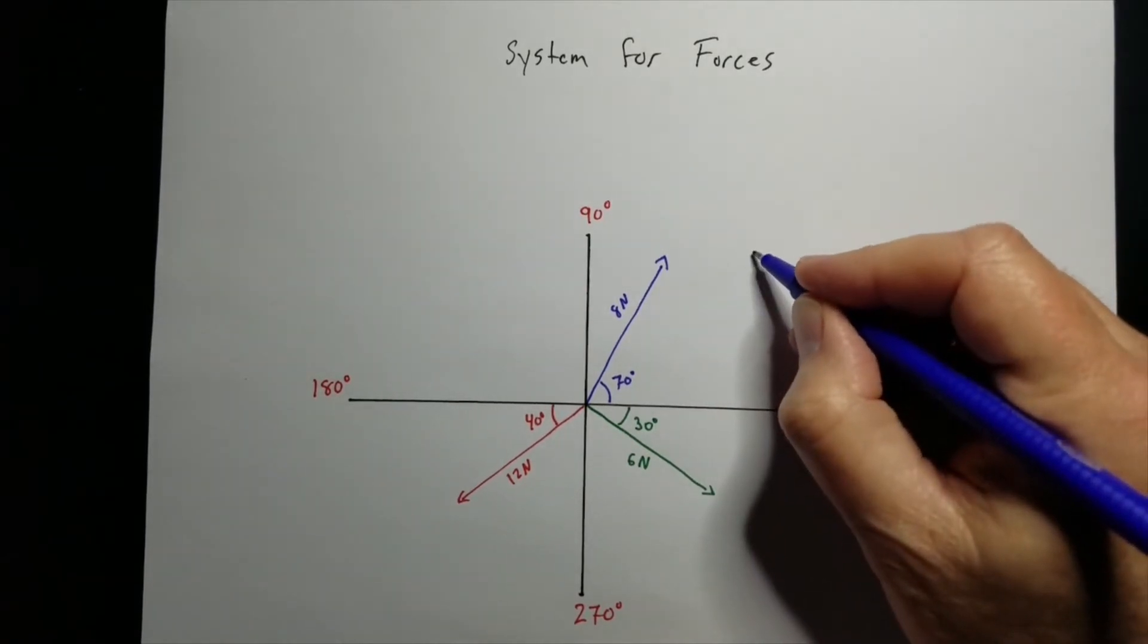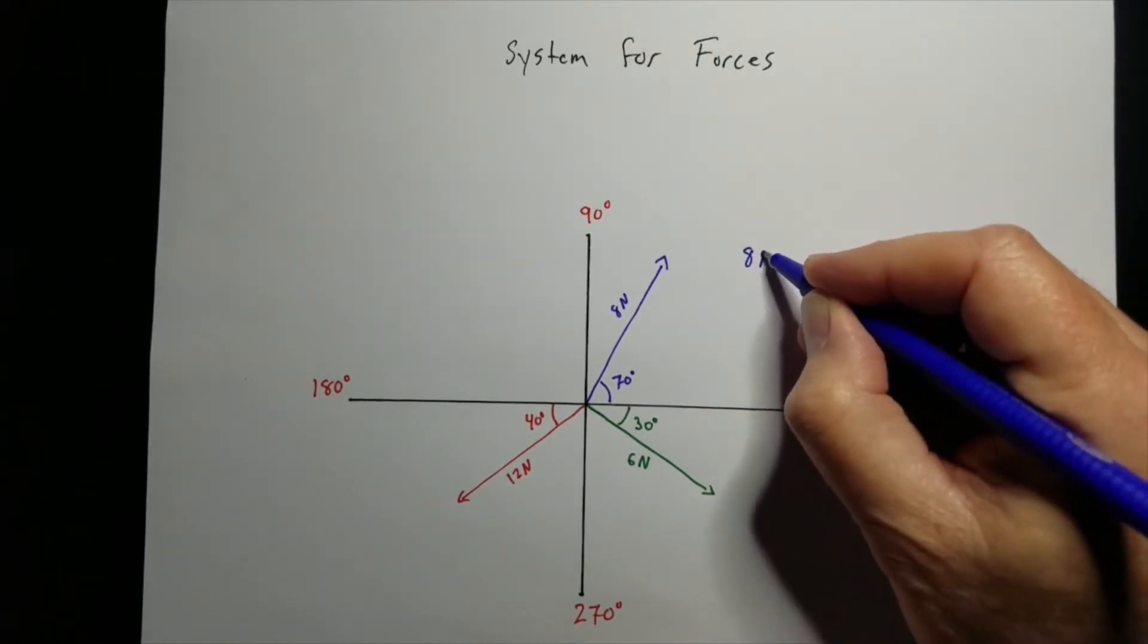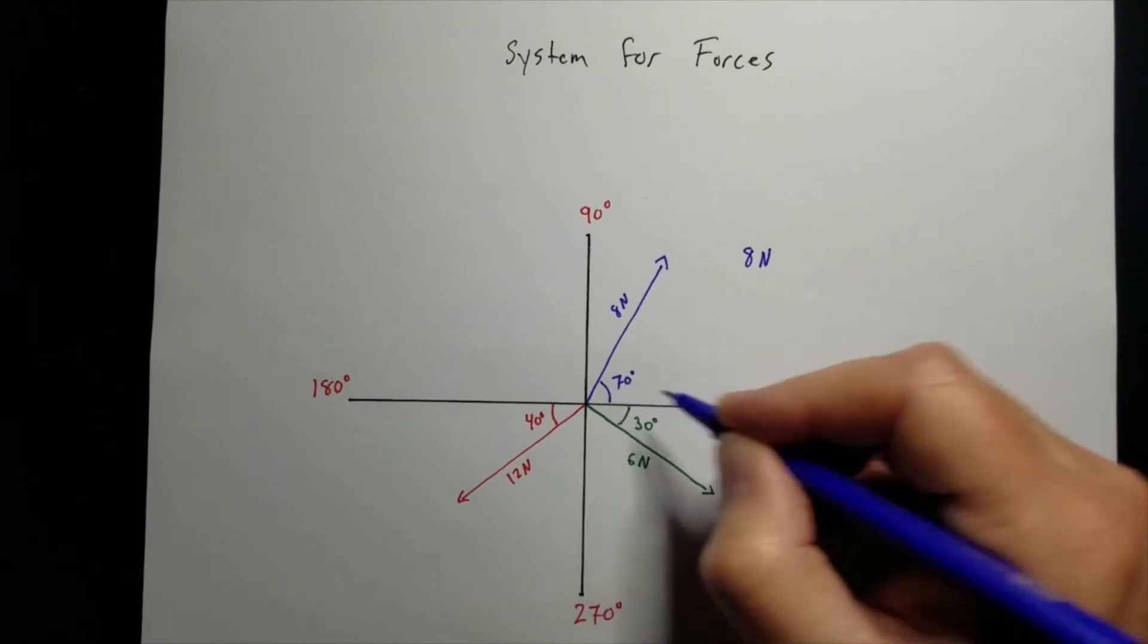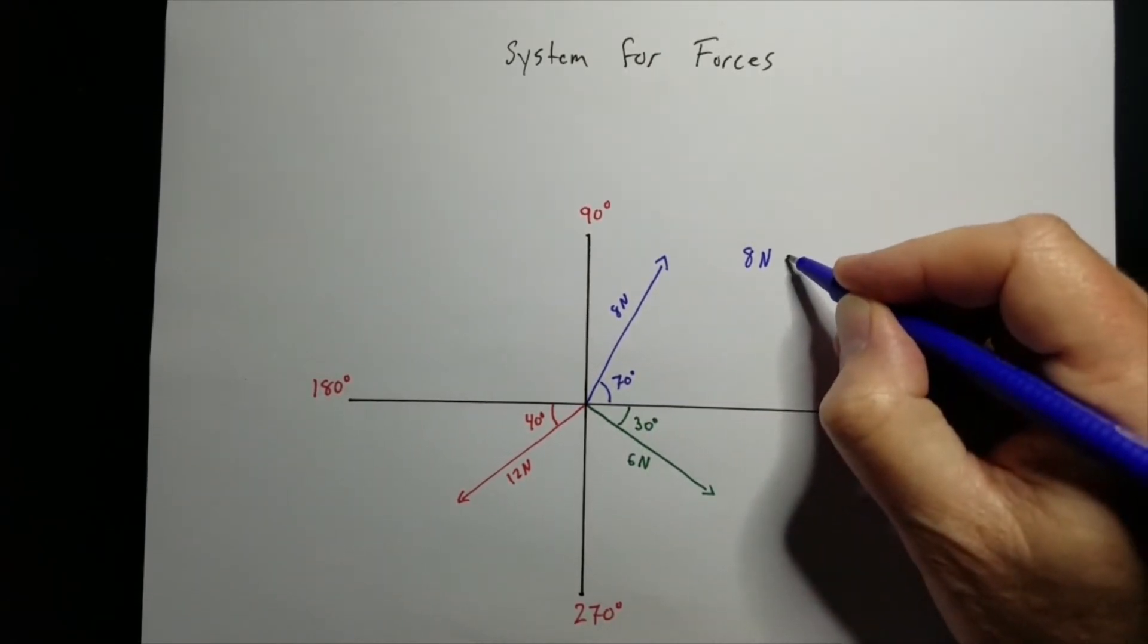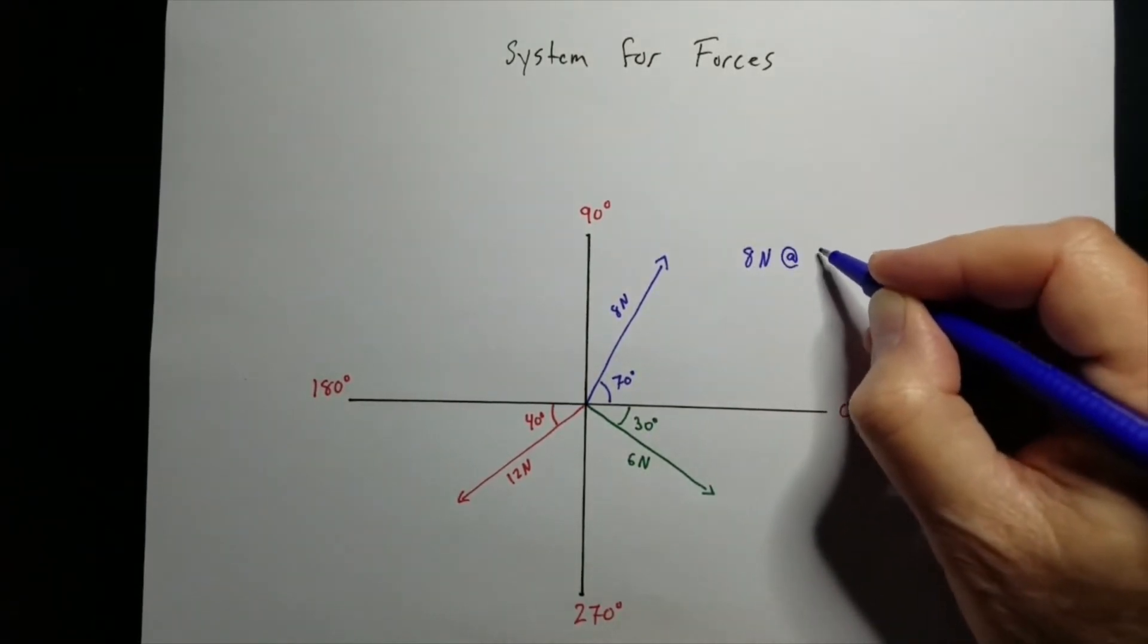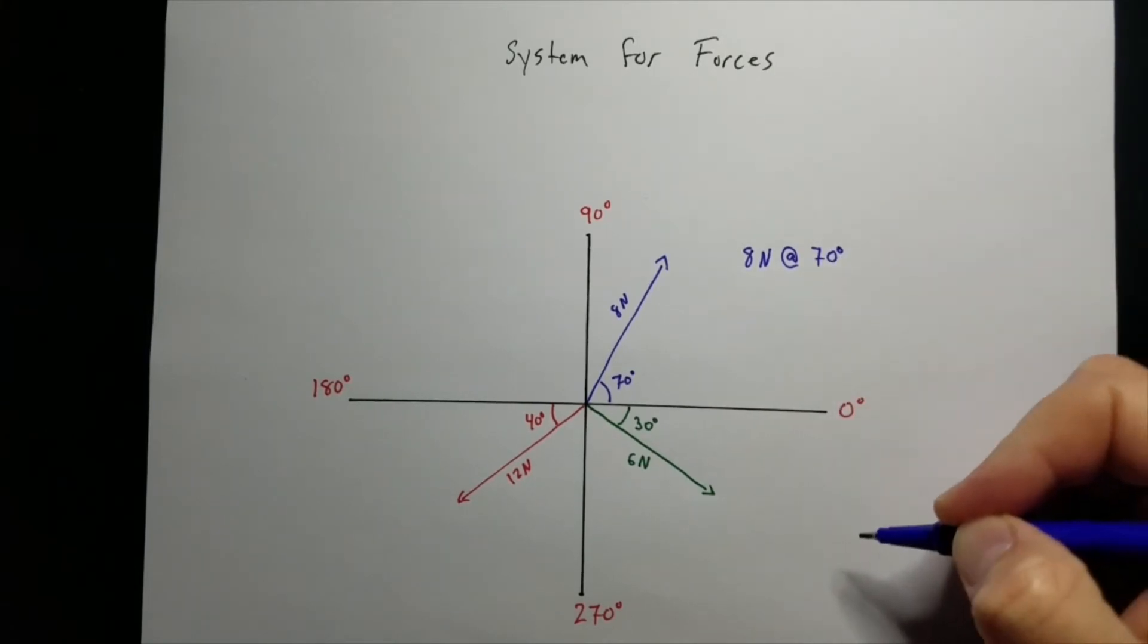So this first one that I've got is 8 newtons. We've already got the angle with respect to 0. So it's 8 newtons at 70 degrees. Easy enough.